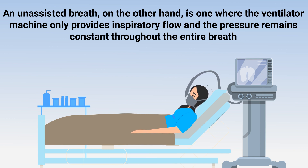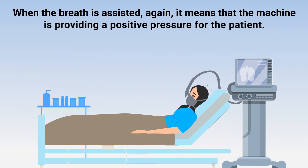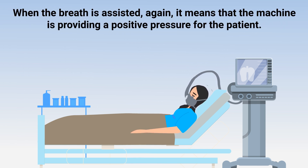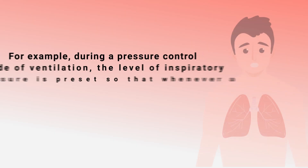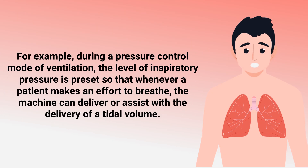An unassisted breath, on the other hand, is one where the ventilator machine only provides inspiratory flow and the pressure remains constant throughout the entire breath. When the breath is assisted, it means that the machine is providing a positive pressure for the patient.